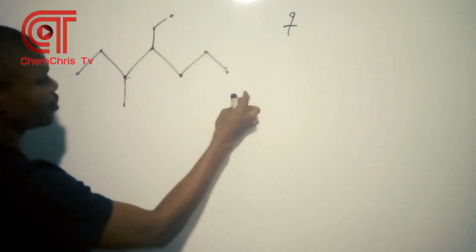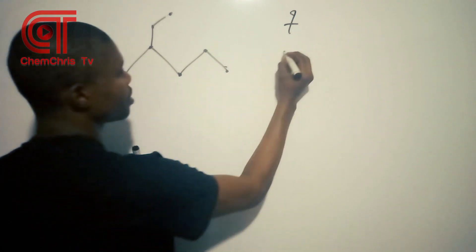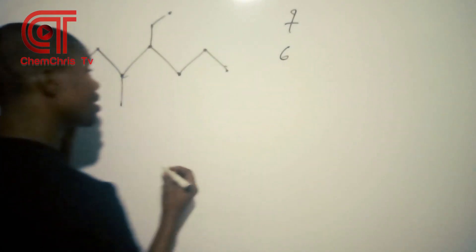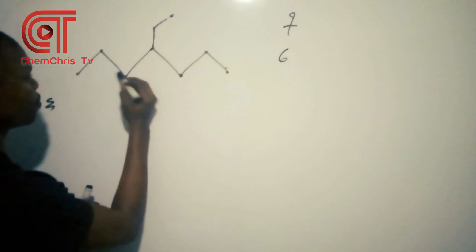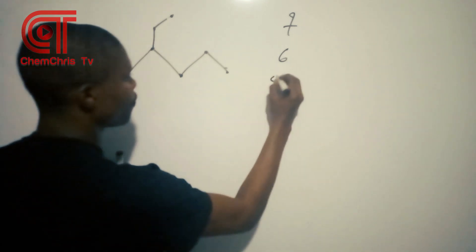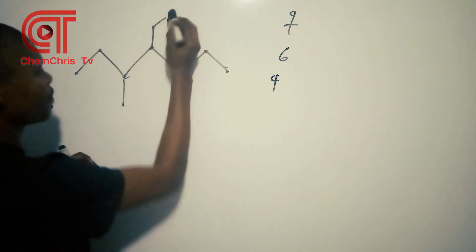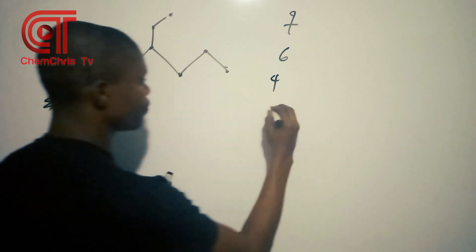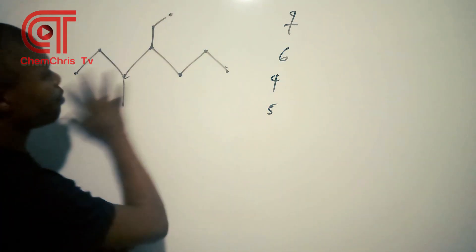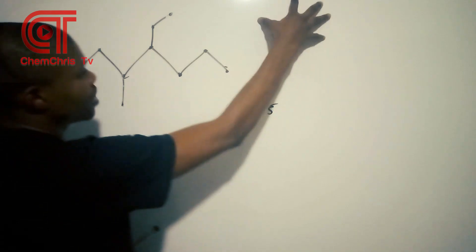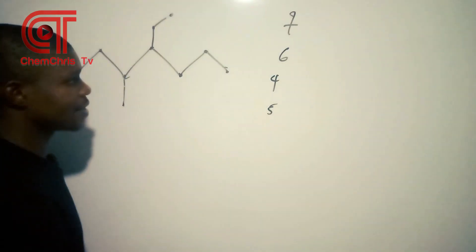Then from here to here we have 4, and another path gives us 5. So counting all paths end to end, we have 7, 6, 4, and 5.